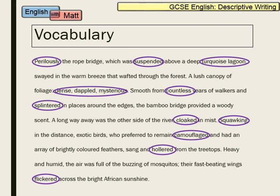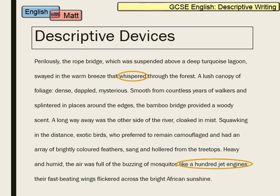Moving on to descriptive devices. For AQA at least, descriptive writing isn't about fitting in a descriptive device in every sentence — that's unhelpful and unnecessary. In about 10 lines of description I've only got two devices: 'whispered', which is personification, and a simile at the bottom. Be very selective about your descriptive devices; you don't have to fit them all in because writers don't do that either. It's okay to decide which devices you want to use — maybe you're more confident with alliteration and personification, or you prefer similes over metaphors. Choose the devices you can use more confidently. 'Heavy and humid' is still in there as alliteration too.